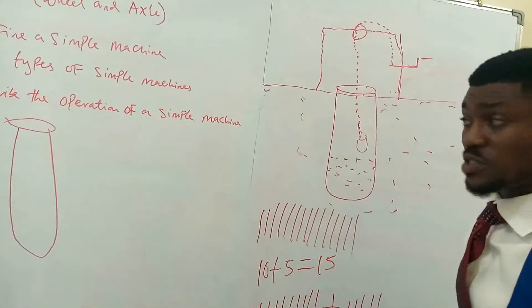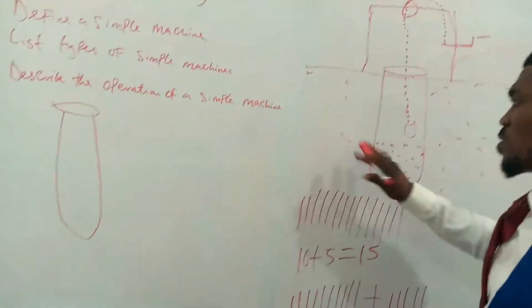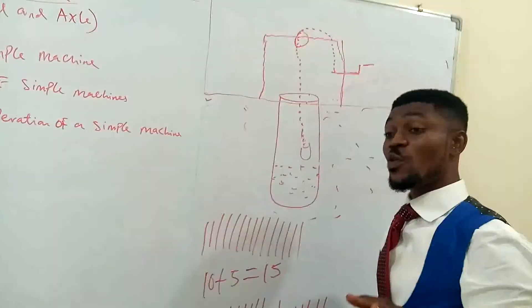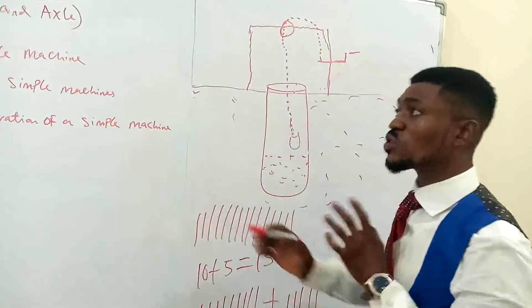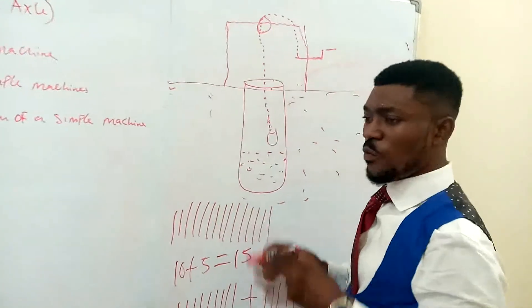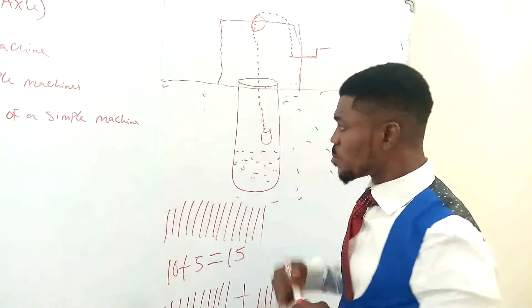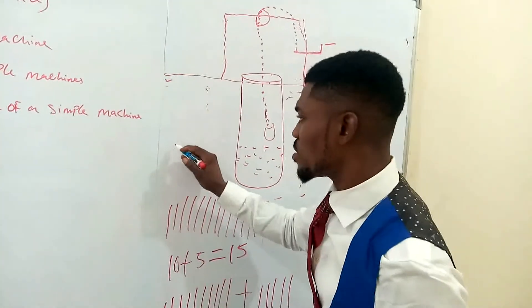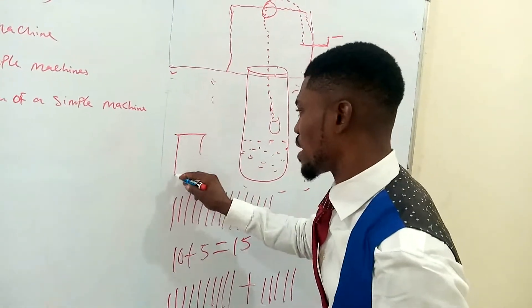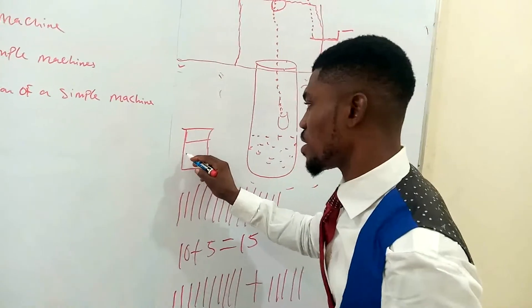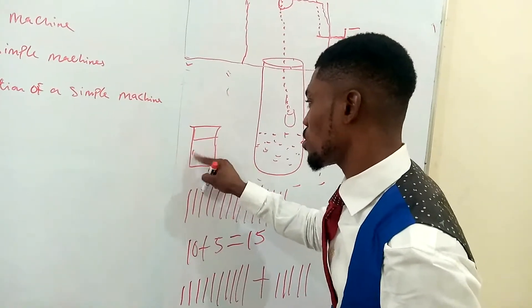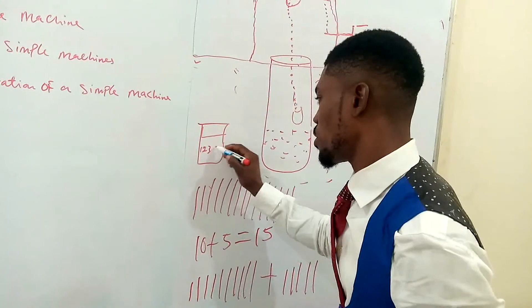But with a simple machine, all you need to do is just press the calculator. I am not encouraging you to use the calculator to solve all mathematical equations, but we are talking about simple machines. Now, when you have a simple machine like a calculator, all you need to do is just press the figure. This is how a calculator looks like. You have the little screen here. You have numbers here: 1, 2, 3, 4, 5, 6, 7, 8, etc.